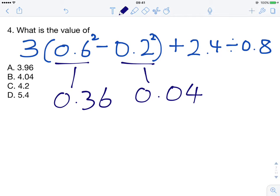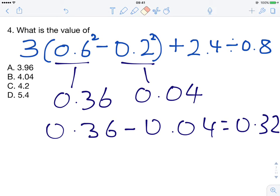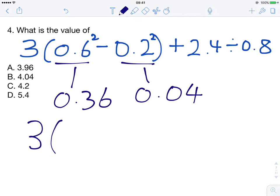Then we can do what's in the brackets next. So that tells us to subtract 0.04 from 0.36, that gives us 0.32. So we can use that to simplify what we already have to get rid of these brackets and these squares. We can rewrite this sum that we had originally as 3(0.32), that was 0.36 subtract 0.04, plus 2.4 divided by 0.8.